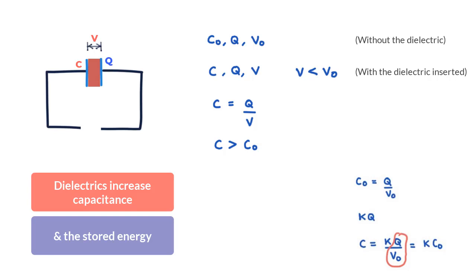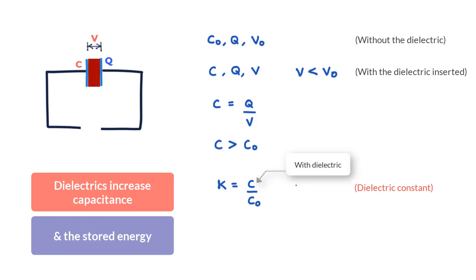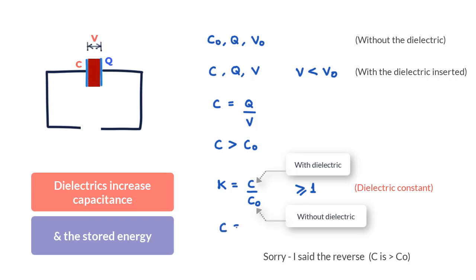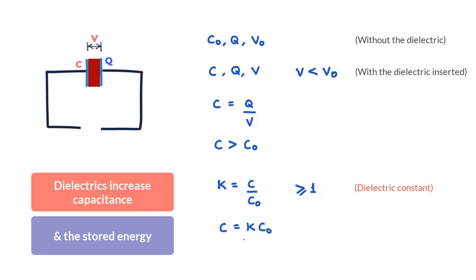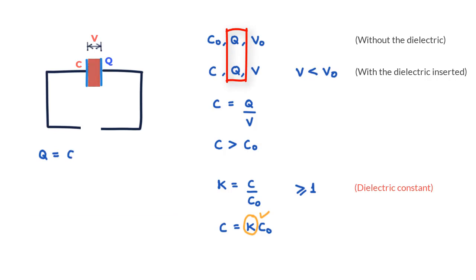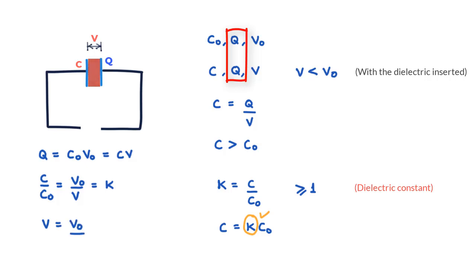Now let us introduce the dielectric constant K of the dielectric material, which is defined as the ratio of C to C₀, where C is the capacitance of the capacitor with the dielectric and C₀ is the capacitance without the dielectric, and the K value is always greater than or equal to 1. K is the factor by which you can enhance the capacitance by introducing the dielectric. Since charge is constant at Q, we have Q = C₀V₀ = CV, so C/C₀ = V₀/V = K, which gives V = V₀/K.